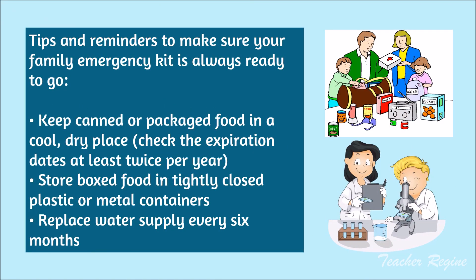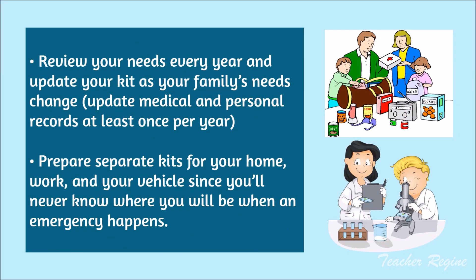Tips and reminders to make sure your family emergency kit is always ready to go. Number 1: keep canned or packed food in a cool, dry place and check the expiration dates at least twice per year. Number 2: store boxed food in tightly closed plastic or metal containers. Number 3: replace water supply every 6 months. Number 4: review your needs every year and update your kit as your family's needs change; update medical and personal records at least once per year. Number 5: prepare separate kits for your home, work, and your vehicle, since you'll never know where you will be when an emergency happens.